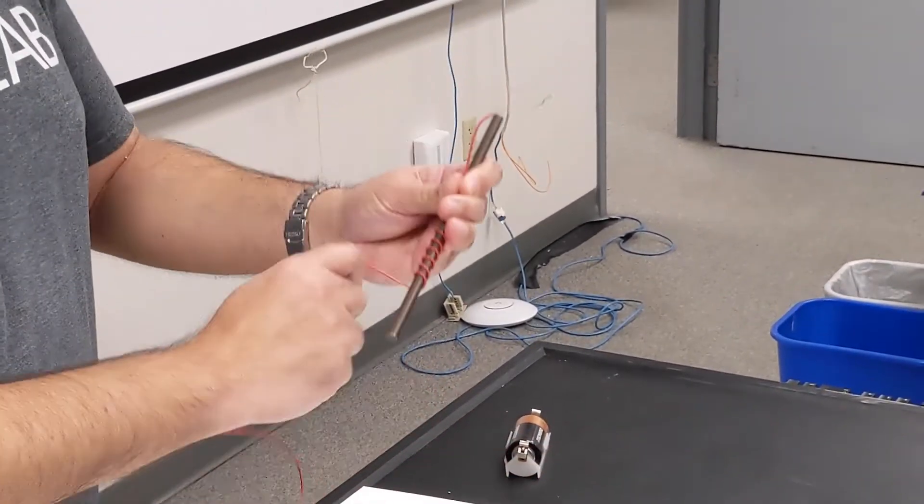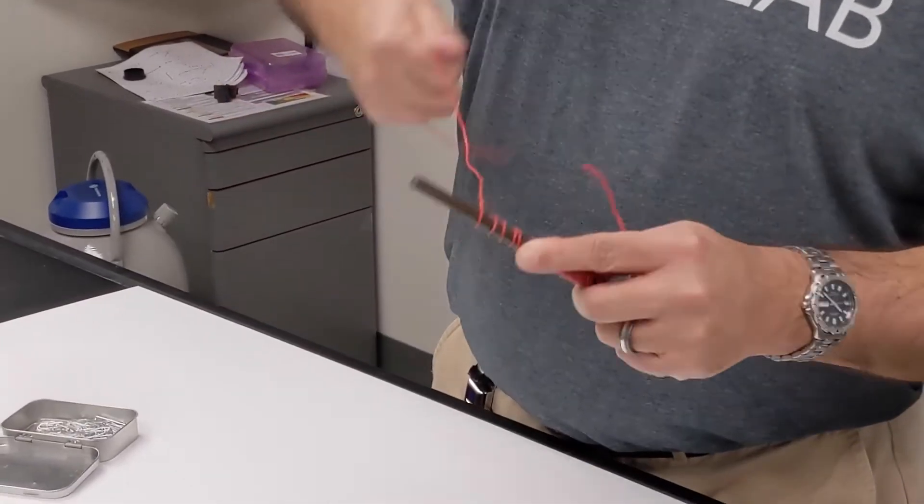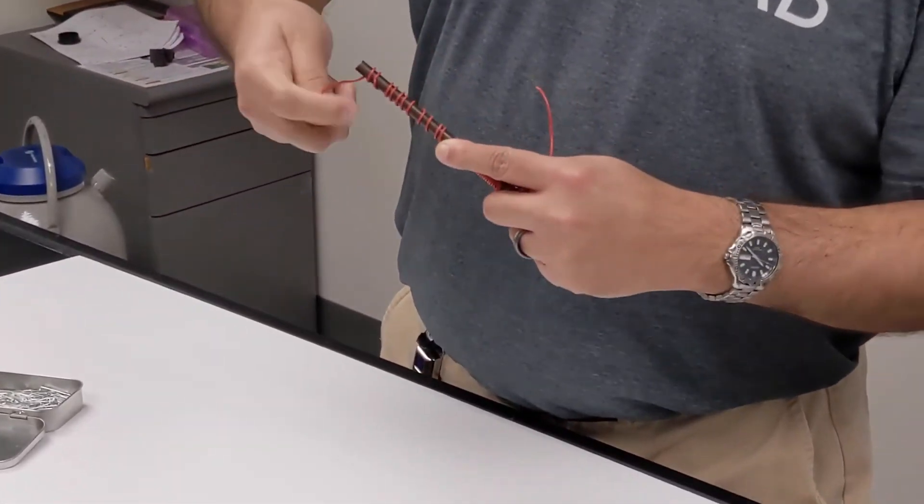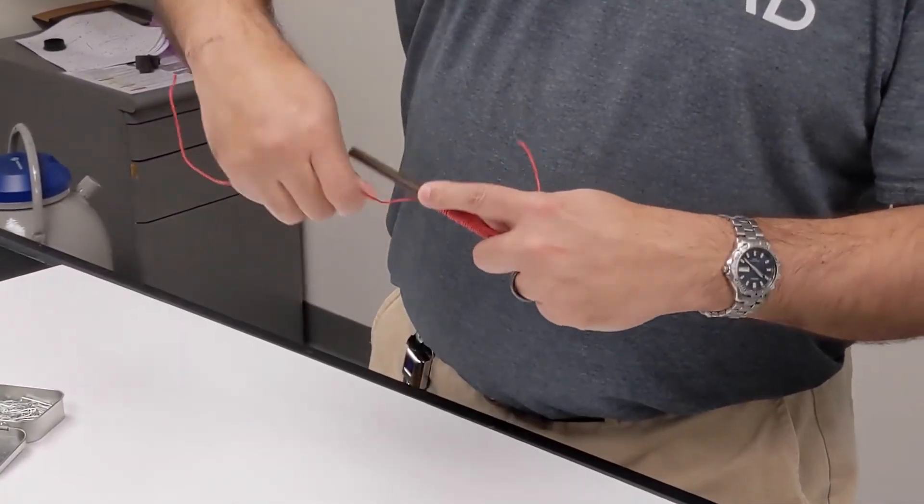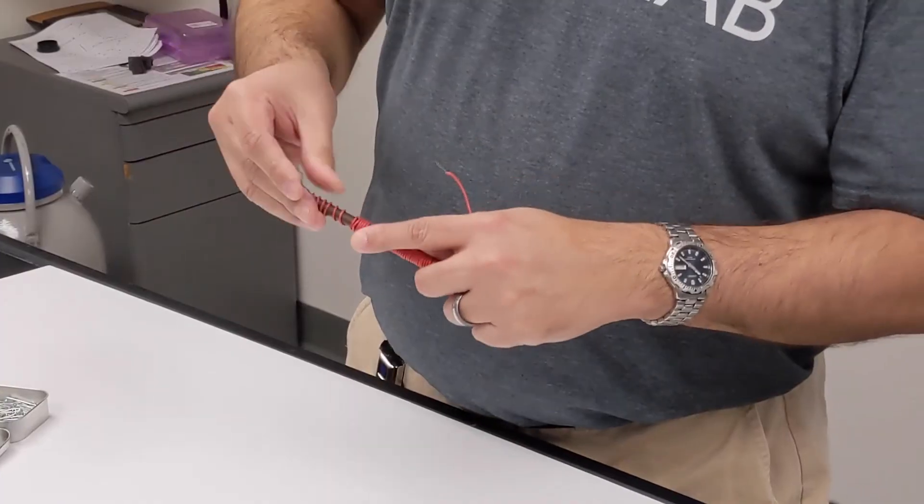So I'm taking this copper wire and wrapping it around this iron rod. At the end, I'll have concentrated the magnetic field inside the center of the coil, which is where the iron is. And since iron is ferromagnetic, we should be able to magnetize it and make a pretty strong electromagnet.